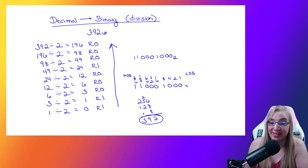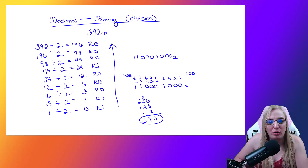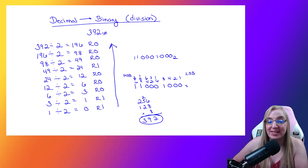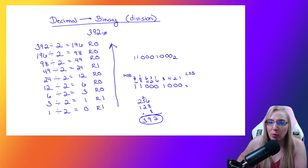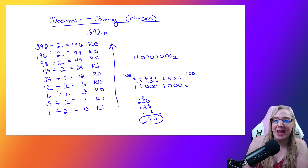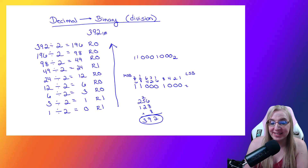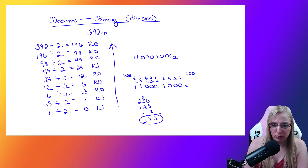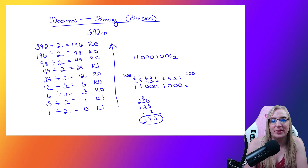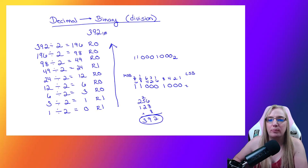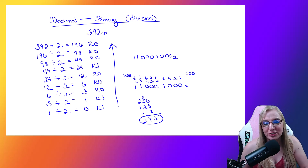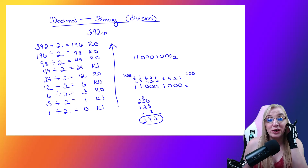That is the basics of conversion. The one takeaway from this whole tutorial is that whenever you're doing conversions — whether from decimal to hex, decimal to octal — the easiest way is to take it down to binary, because you can convert anything from binary. Binary is the simplest form. Practice is key. You just have to keep doing it, so get as much practice as you can. I'll see you on the next tutorial.